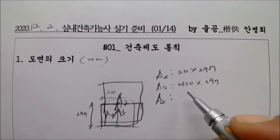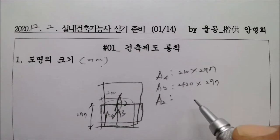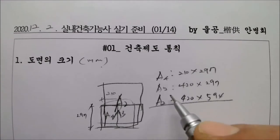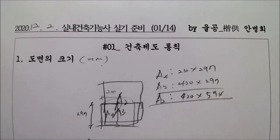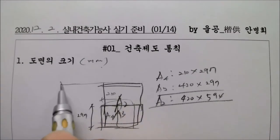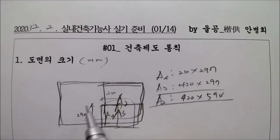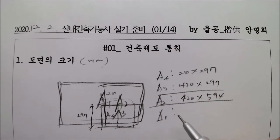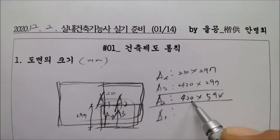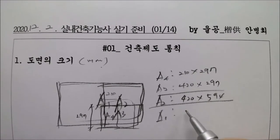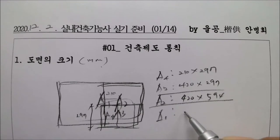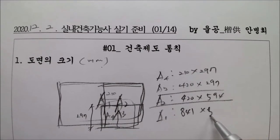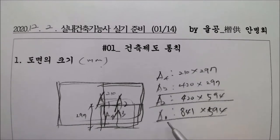A2는 얼마? 420을 살려두고 594가 됩니다. A2가 두 장이 붙으면 A1이 됩니다. A1은 주의해야 됩니다. 420이 두 개 붙으면 840이지만, 소수점이 있기 때문에 841에 594가 됩니다. A1.